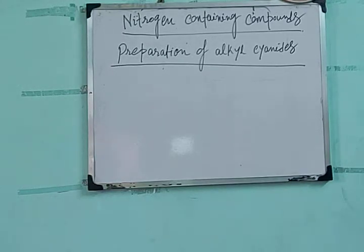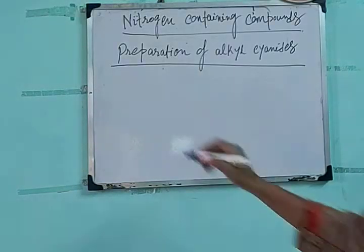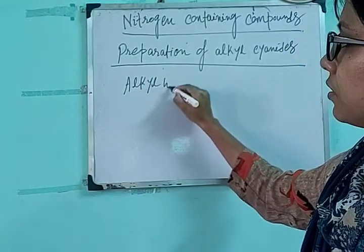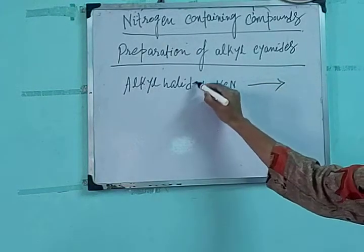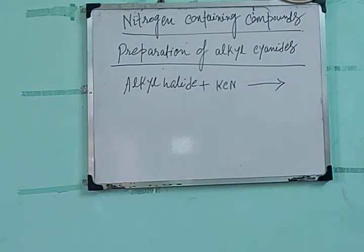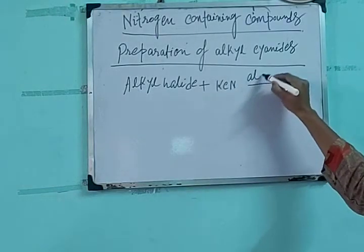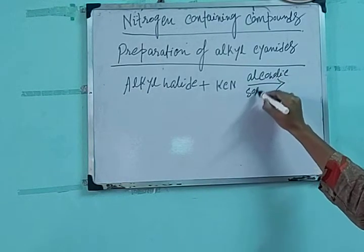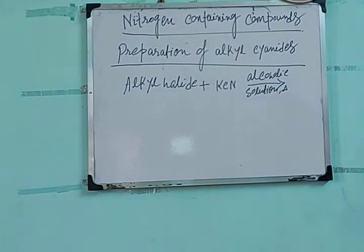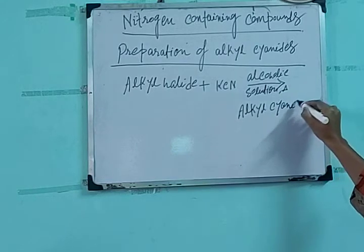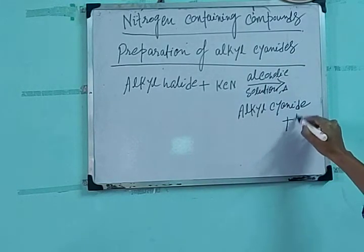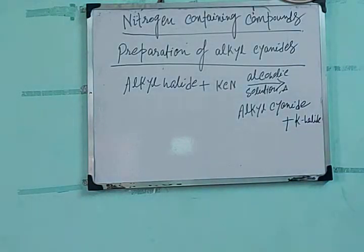The first method for preparation of alkyl cyanides is the reaction between alkyl halides and potassium cyanide. Any alkyl halide plus KCN in presence of an alcoholic solution — we heat the mixture and we get alkyl cyanide plus potassium halide. This is the general method for preparation of alkyl cyanide.